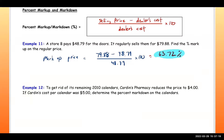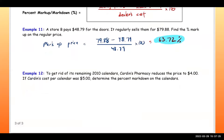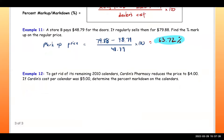The last problem: to get rid of its remaining 2010 calendars, Cardin's Pharmacy reduces the price to $4.00. Cardin's cost per calendar was $5.00 — determine the percent markdown on the calendars.